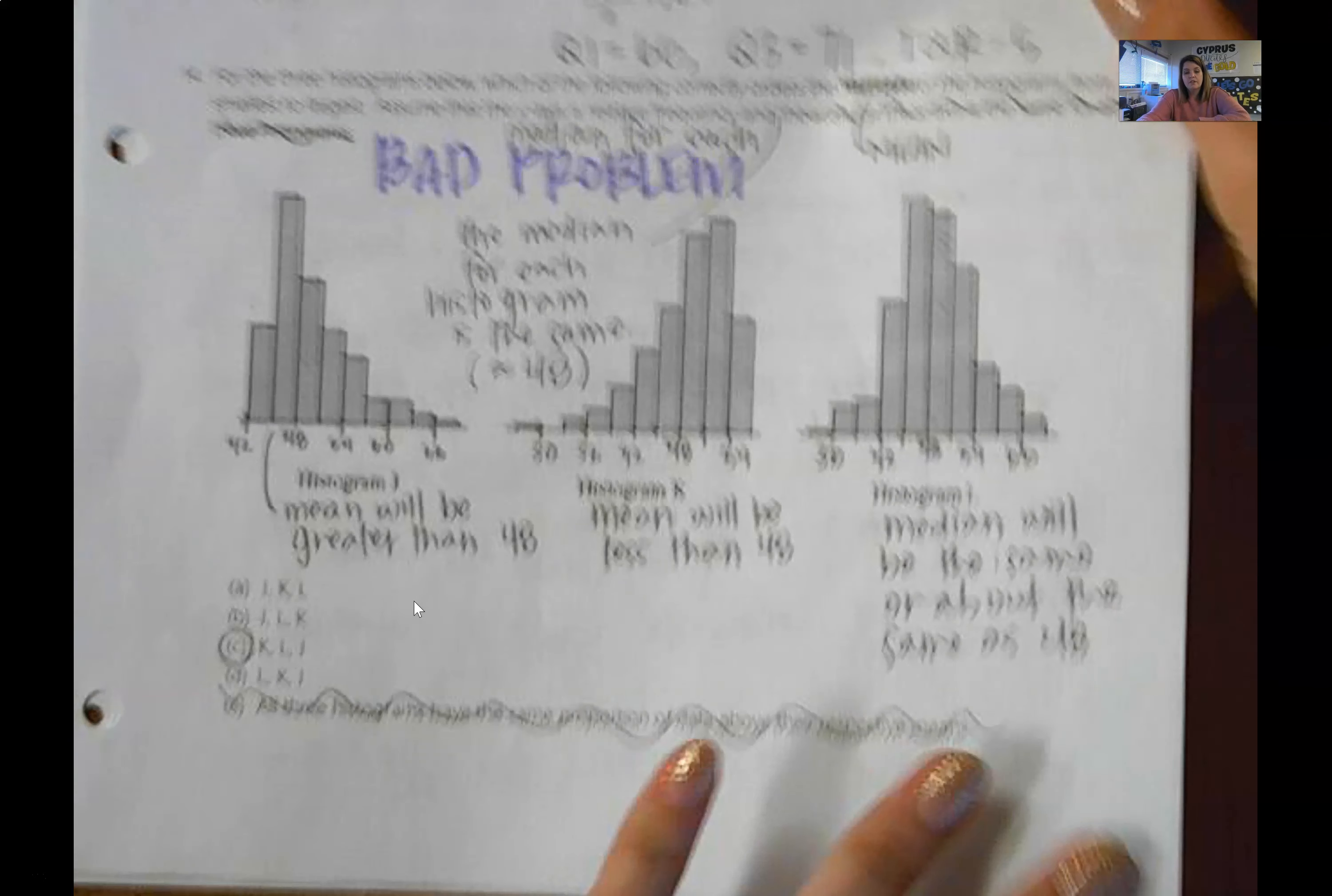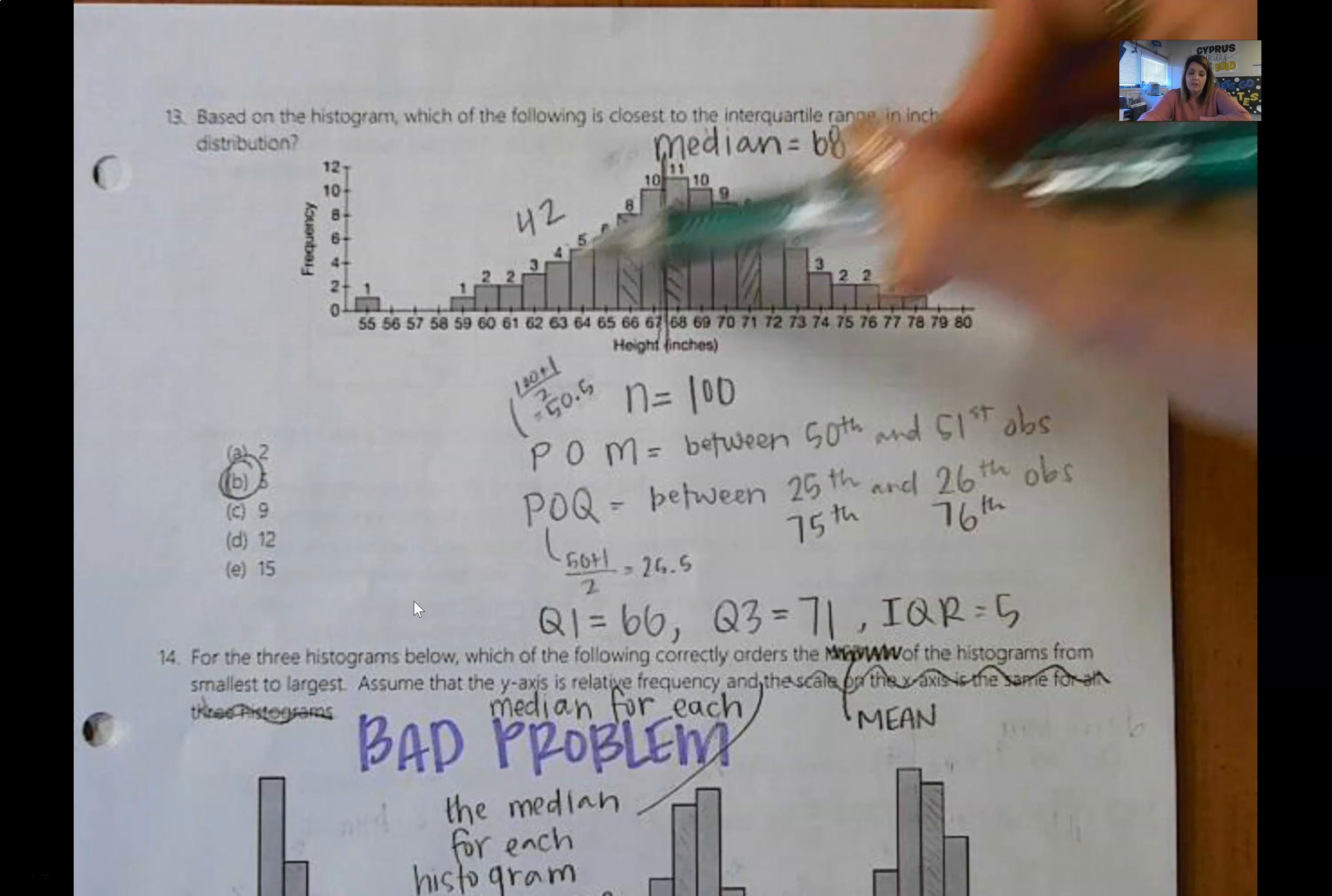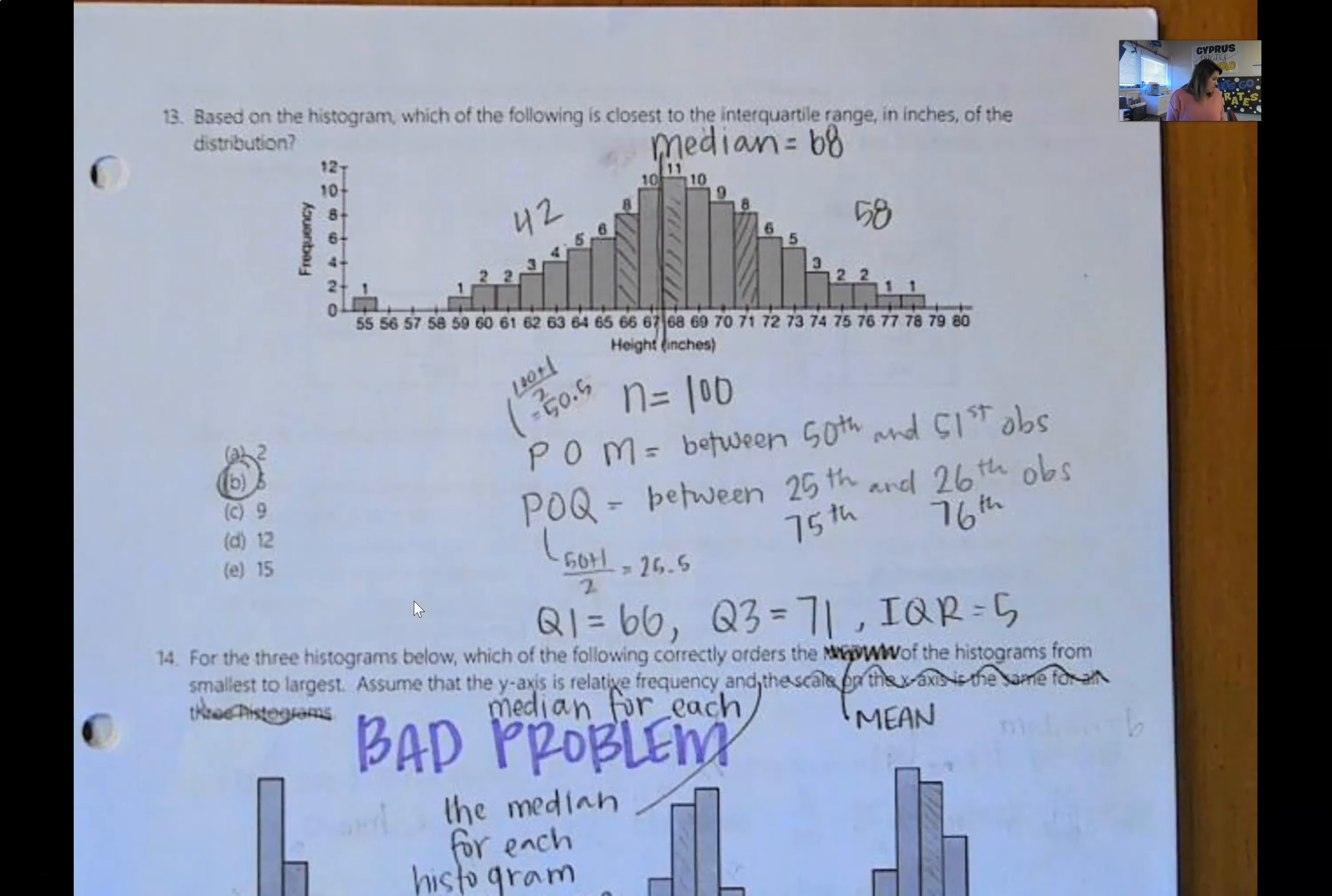13 is another opportunity to practice finding quartiles and median. All of my work is shown here. I got an answer of beta. So I went through and counted up how many observations by adding the number at the top of each bin. I got 100. I found the position. I found what bin those positions were in and calculated IQR.